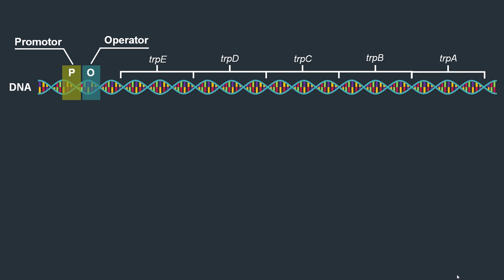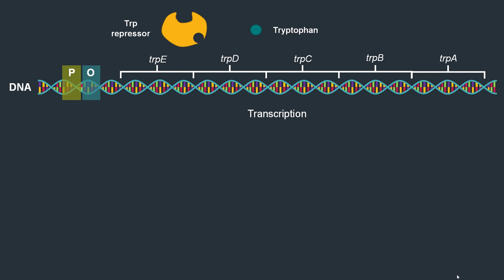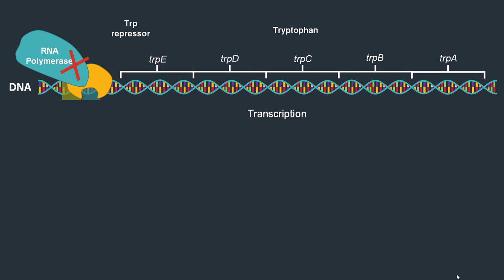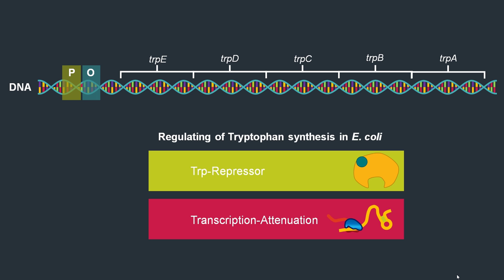The tryptophan repressor regulates this operon on the transcriptional level, so at the DNA level. Two DNA segments upstream of the tryptophan genes are important: the promoter, which the RNA polymerase recognizes to initiate transcription, and the operator, a DNA segment at which a repressor can bind. This binding happens under high tryptophan conditions, because tryptophan binds the repressor causing a conformational change, enabling it to bind the operator. The repressor then acts as a roadblock, preventing RNA polymerase from docking onto the promoter, so the tryptophan genes cannot be transcribed.